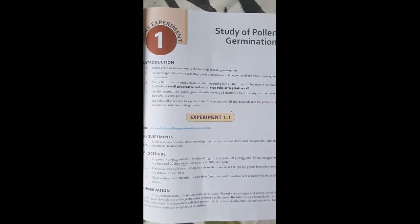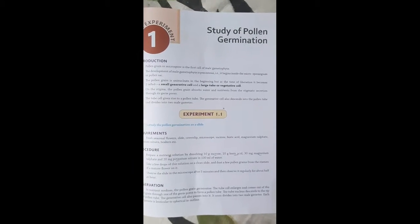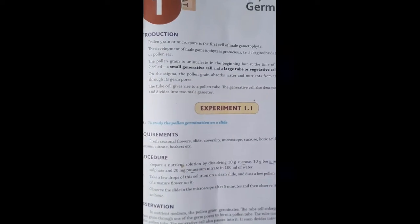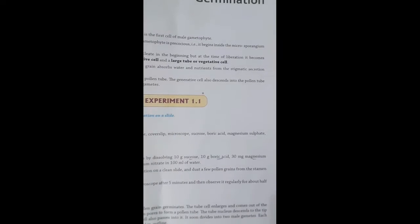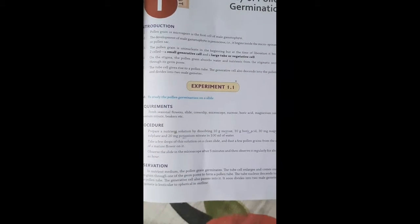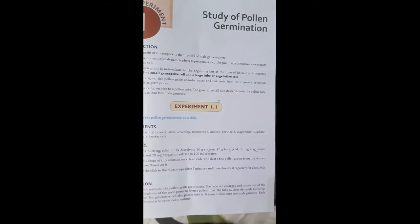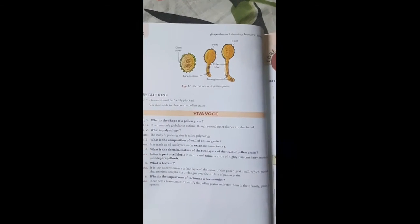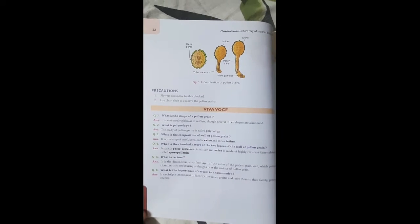Hello students, today we have to do a minor experiment: study of pollen germination on a slide. As we have learned in chapter 2, sexual reproduction in flowering plants, pollen grains or microspores are the male gametophyte in which the male gametes develop. The pollen grain is uninucleated in the beginning, but at the time of liberation it becomes two cells: a small generative cell and a large tube cell or vegetative cell.